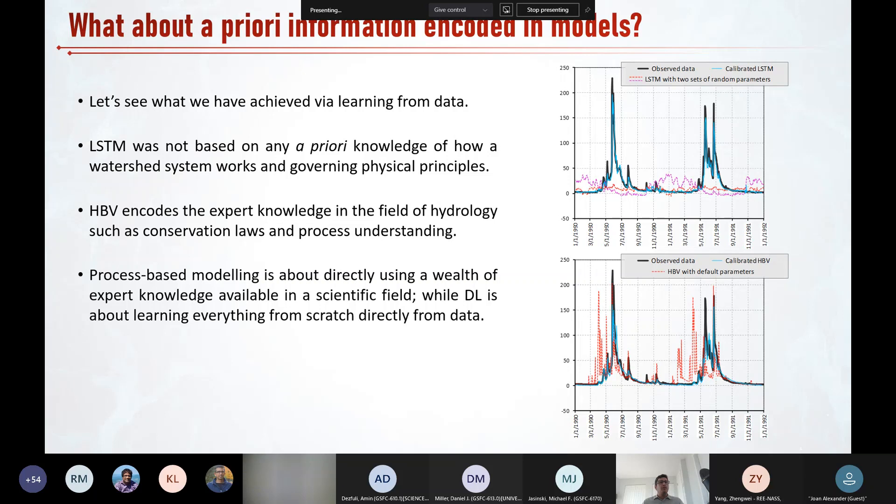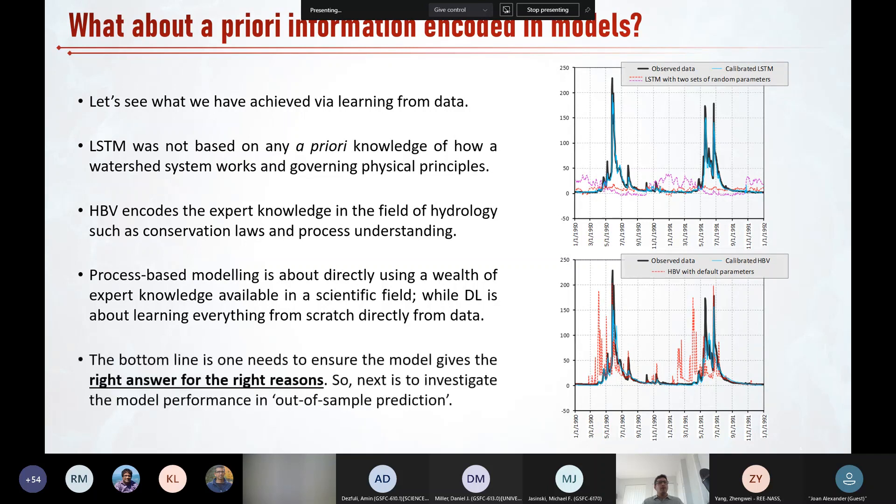So then a fundamental difference between the two models become more clear. Using a process-based model is about directly using a wealth of expert knowledge available in a scientific field while using neural networks is about learning everything from scratch directly from data. And this difference is manifest in the number of parameters that need to be tuned to achieve a reasonable performance in each model. So as we saw in the previous slide, the LSTM model achieved a better performance in fitting calibration data. However, in any modeling exercise, one needs to ensure the model gives the right answer for the right reasons. That is why proper model evaluation in out of sample prediction is critically important, as I will discuss next.